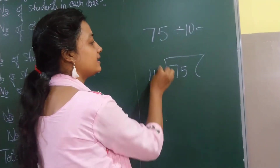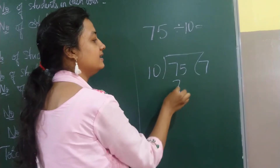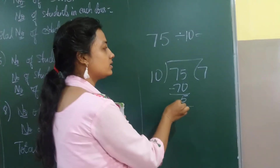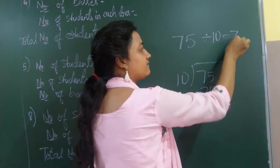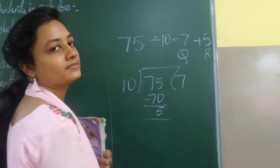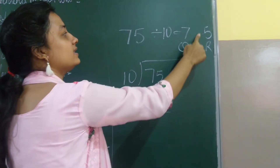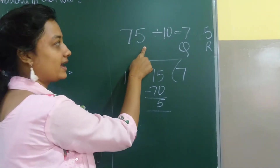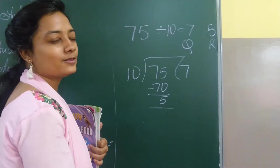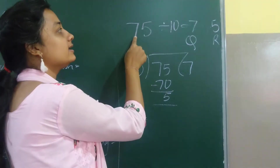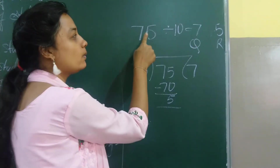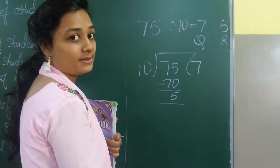75 divided by 10. 10 times 7 is 70, so I have 5 as remainder. I get 7 as my quotient and 5 as my remainder. So the small trick is: if you have a 2-digit number, the tens digit will be my quotient and the ones digit will be my remainder.